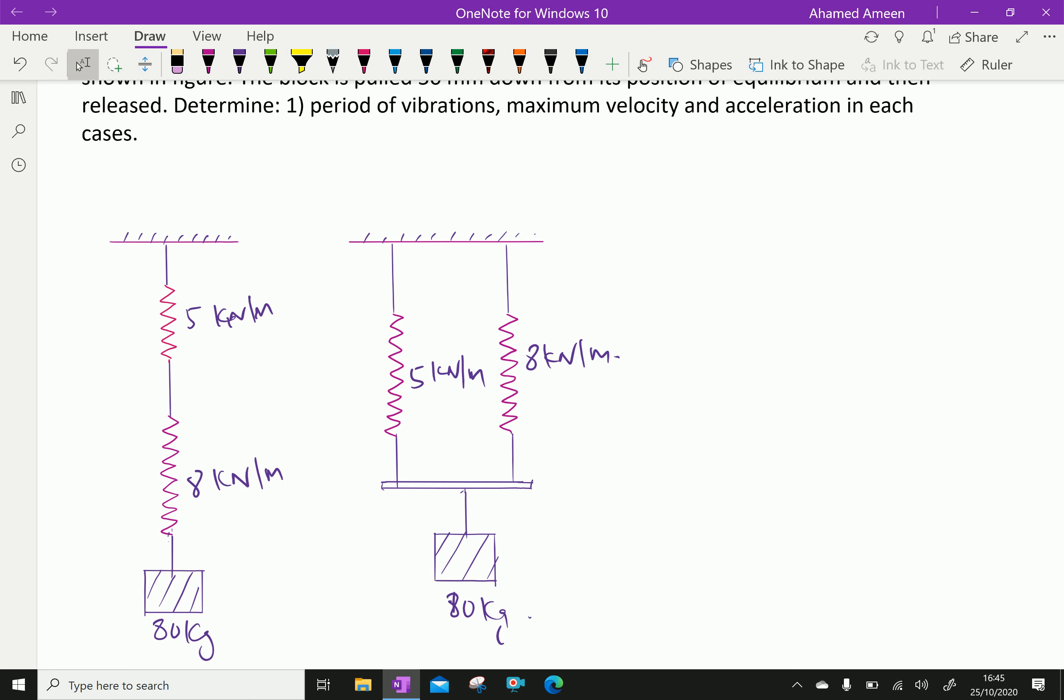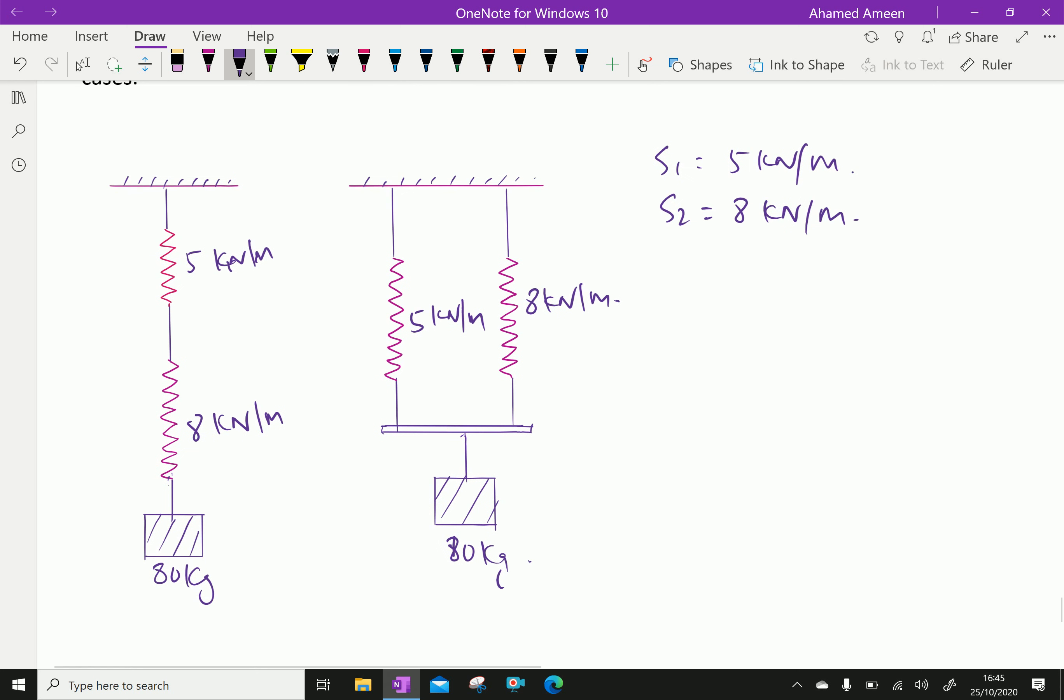S1 equal 5 kN per meter, S2 equal 8 kN per meter. First in series, we will discuss about the springs in series.